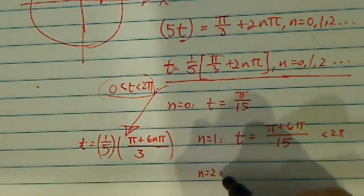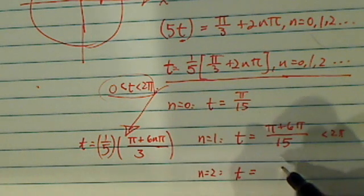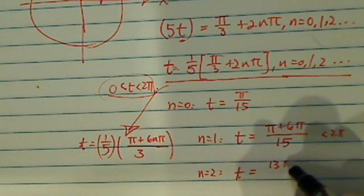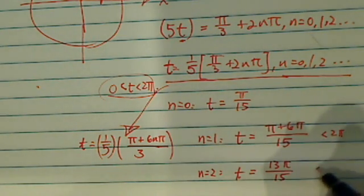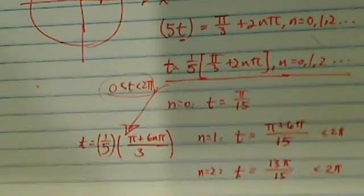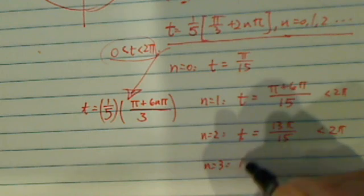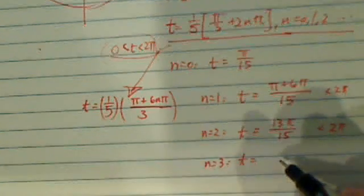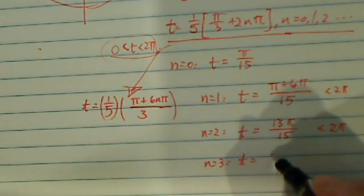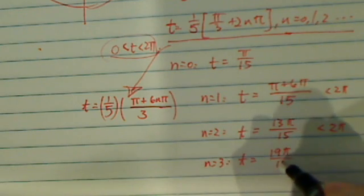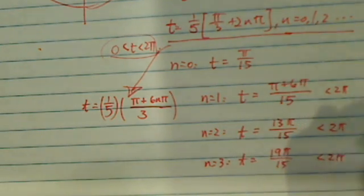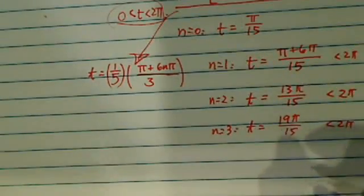When n equal to 2, we have t is equal to 13 pi over 15. Okay, that's still less than 2 pi. So you're going to keep on going until you reach when t is greater than 2 pi. So when n equal to 3, I have t equal to 19 pi over 15. Okay, that's still less than 2 pi, because 2 pi here should be 30 on top.